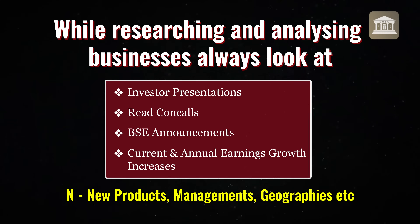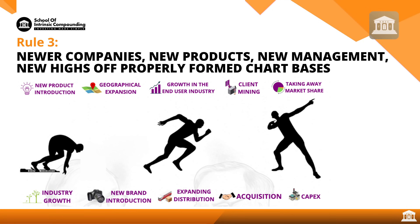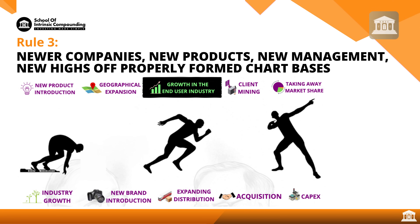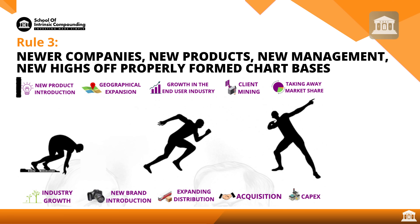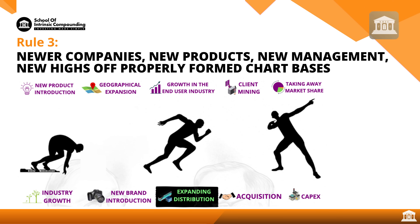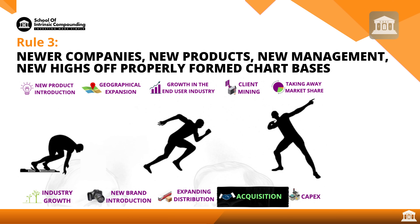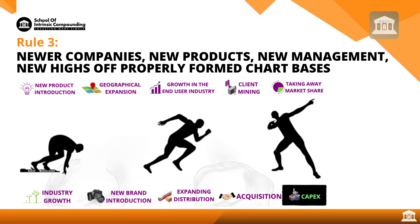Always look at investor presentations, conference calls, and BSE announcements — doing all these things together with current quarterly and annual earnings growth gives you a chance to understand why earnings are increasing. Newer products, newer managements, or newer geographies are what we're looking for. Earnings growth can also come from growth in end-user industries, client mining, geographical expansion, new product introductions, industry growth, new brand introductions, expanding distribution, acquisitions, and capex.